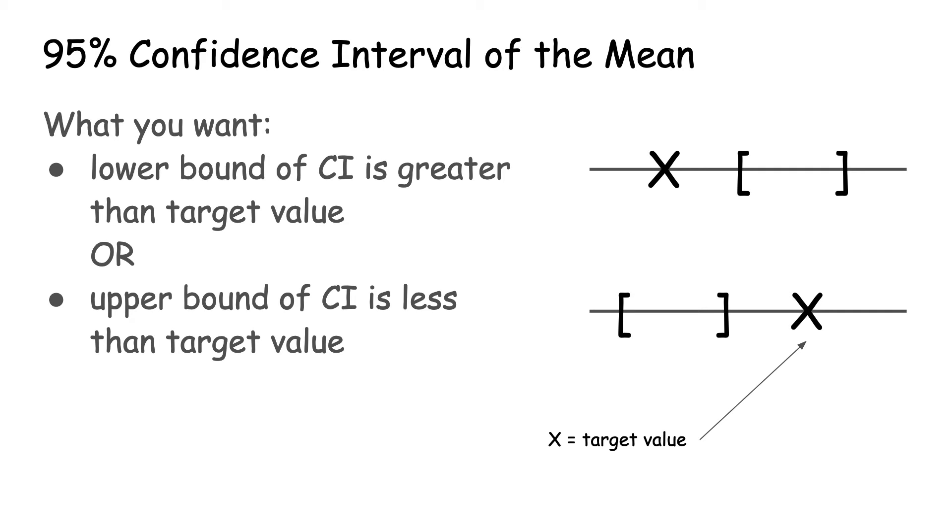For the confidence interval approach, you want to see that the target value is outside the bounds of the confidence interval. In other words, the target value is either less than the lower bound of the confidence interval or greater than the upper bound of the confidence interval.